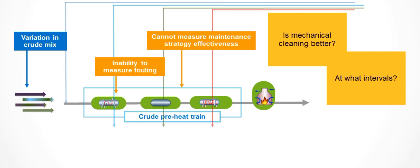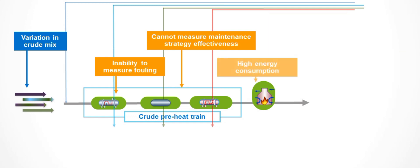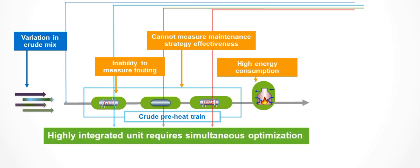Inefficiencies in the preheat train result in high energy consumption in the furnace. The complexity of the insulated equipment and the highly integrated CDU make appreciation of operational issues even more difficult with simple methods.